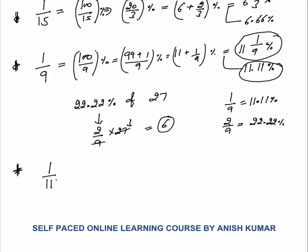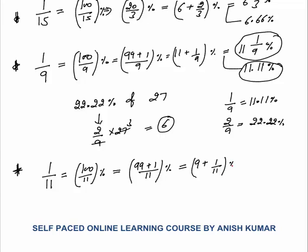One by 11 equals 100 by 11 percent. Since 100 is not divisible by 11, write as 99 plus 1 by 11, giving 9 plus 1 by 11 percent — that is 9 and 1/11 percent. You can also write this as 9.09 percent.